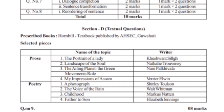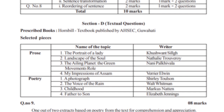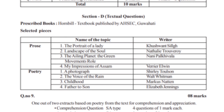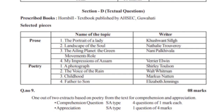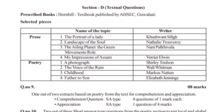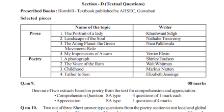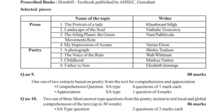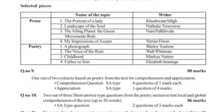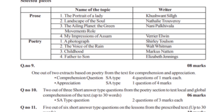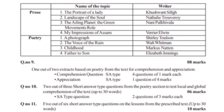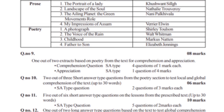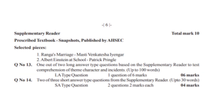The first chapters of the textbook include: Portrait of a Lady, Landscape of a Soul, The Green Movement's Rule, My Impression of Assam. In the poetry section: A Photograph, The Voice of the Rain, Childhood, and Father to Son.